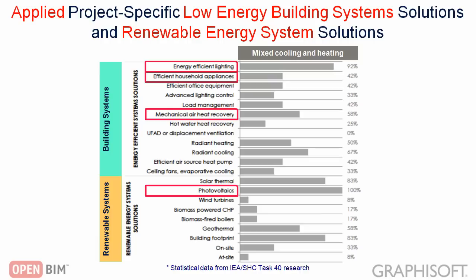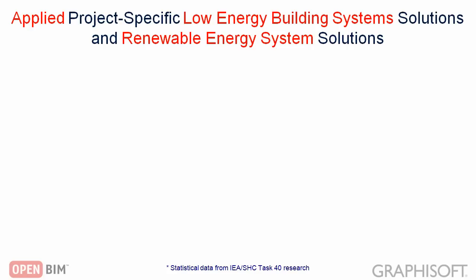Review the designed building's energy demands. Investigate building energy optimization options. Execute sensitivity analysis. Determine the project-specific solution set. The content of this table shown on the screen is also discussed — it summarizes the results of an extensive study carried out by the International Energy Agency, Solar Heating and Cooling Program Task 40 Research Group. It presents statistical data about the relevance of applied energy efficient building system solutions and renewable energy system solutions for the mixed cooling and heating climate where our example project is located.